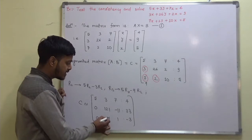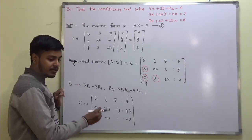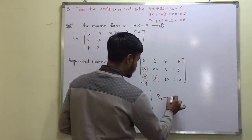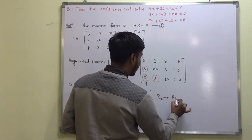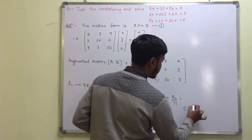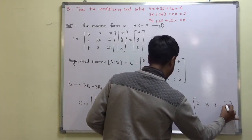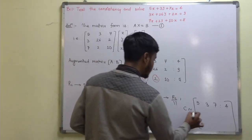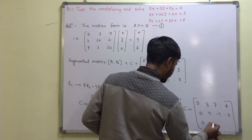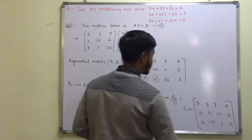These calculations may affect the rank, so let me simplify. R2 changes to (1/11) times R2. This will give C equivalent to: first row [5, 3, 7, 4]; second row [0, 11, −1, 3]; third row [0, −11, 1, −3].